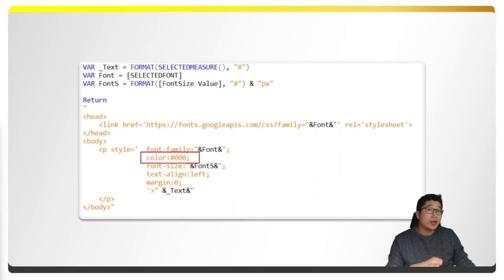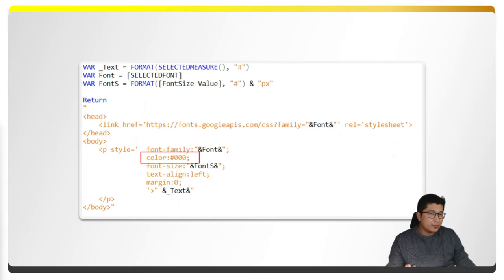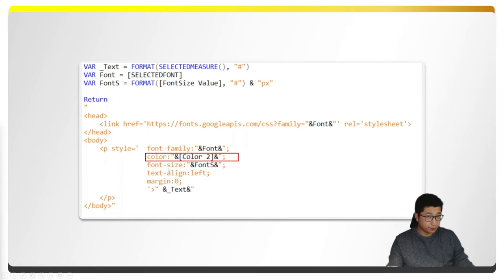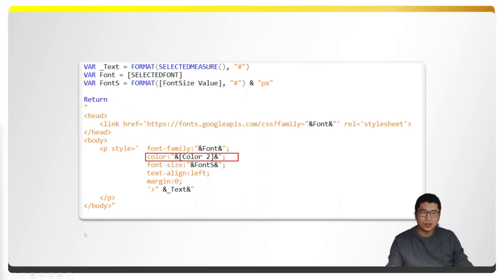Before we go further, I want to talk about colors. Right now this code only works in black because the color value is static. That wasn't enough for me, so I created a couple more calculation items for the calculation group with some small adjustments. The first one has a color variable — a measure that inputs a specific color into the HTML code. The color can be RGB, a named value, or hex codes also work.